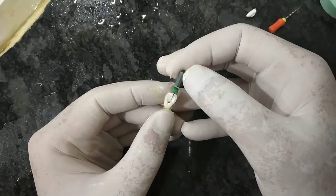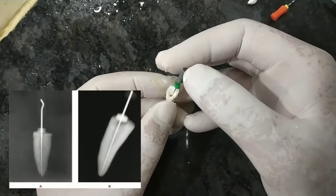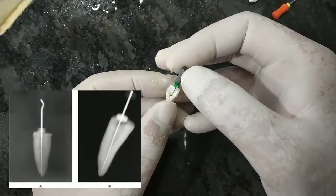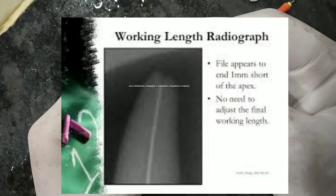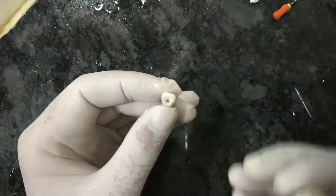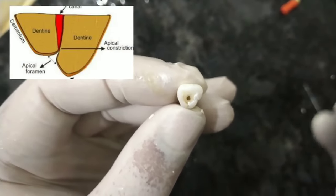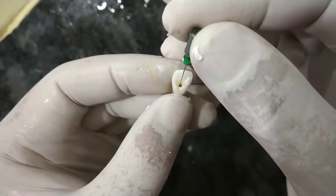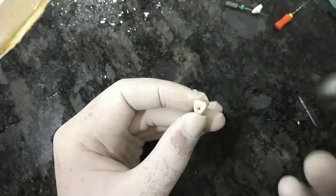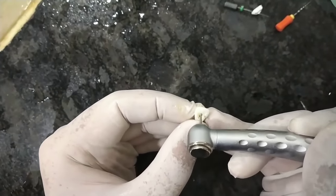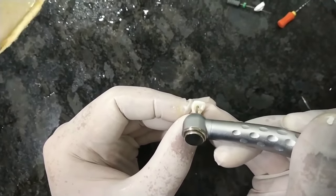Before doing all this we have to determine the root canal length by taking a radiograph — we insert the file and take an IOP of the particular tooth. Suppose the root canal length is 21 mm or 20.5 mm, you have to note it down and check the patency. The shape of the canal is almost ovoid in shape. We have to remove the dentin from the edges — dentin present on the sides and the upper part also needs to be removed.